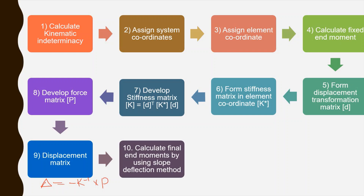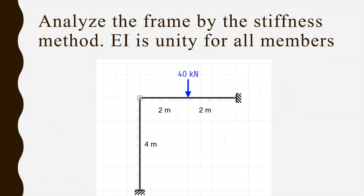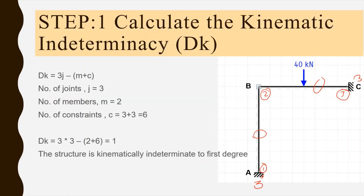Using an example, let us see how to apply the stiffness method. The question is: analyze the frame using the stiffness method, with EI equal to unity (1) for all members. The first step is to find the kinematic indeterminacy. For this frame, we have 3 joints — 1, 2, and 3 — and 2 members.